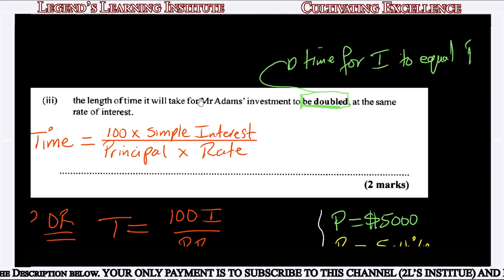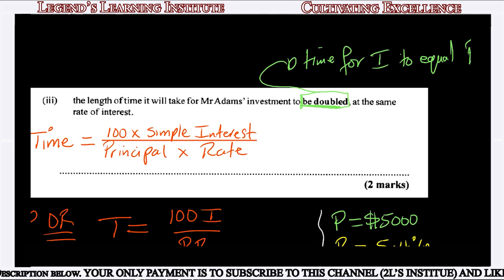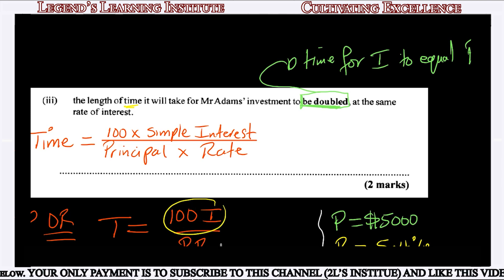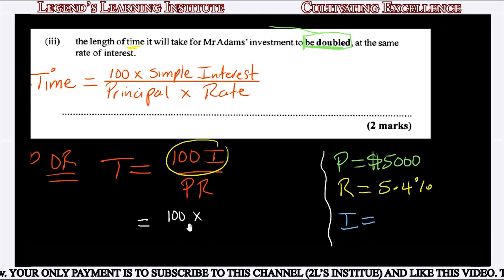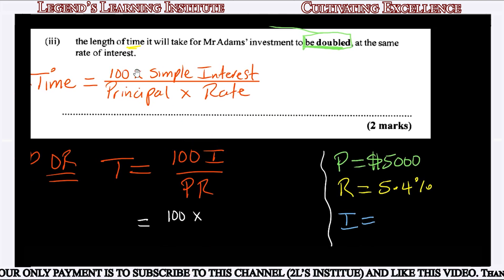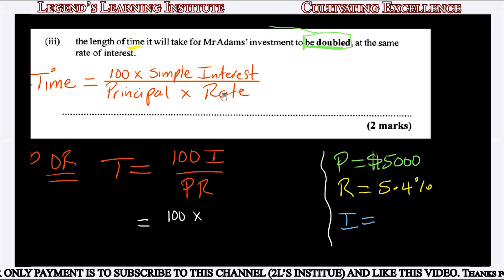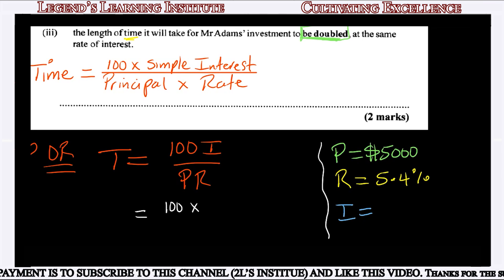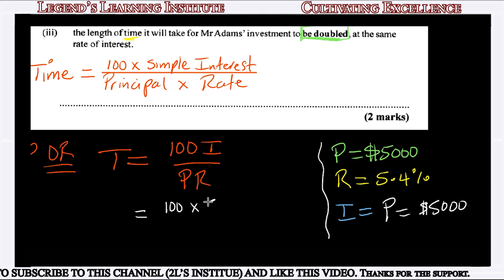Since we want to find the time, the formula is T = 100I/(PR), or 100 times the interest divided by the principal times the rate. The interest would have to be $5,000 for his investment to be doubled.